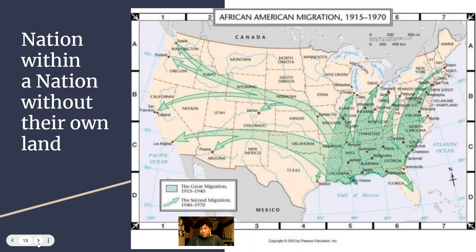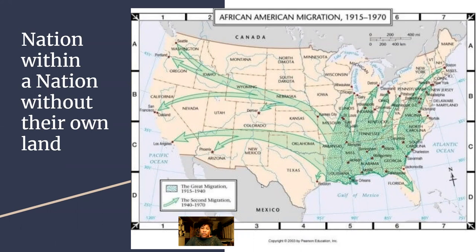We can argue that point on a couple of maroon settlements, but that's a whole other subject. In general, there was no large amount of land set aside specifically for Black people to live on and conduct themselves as they would like to.